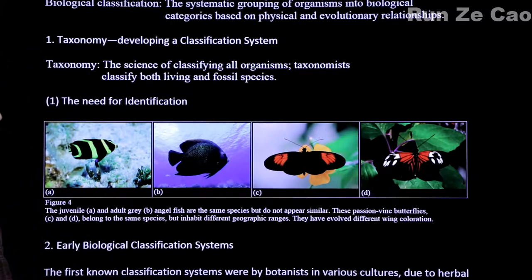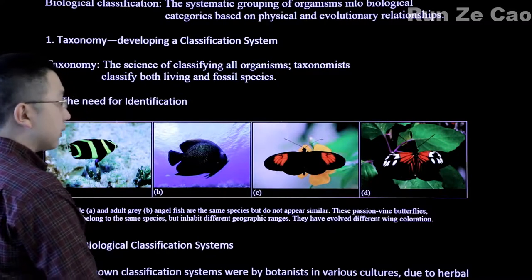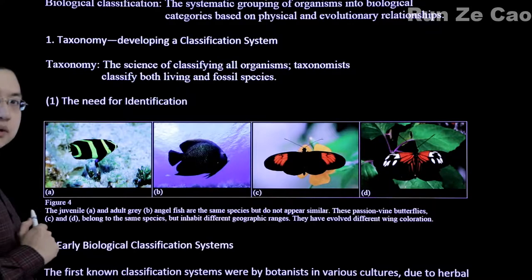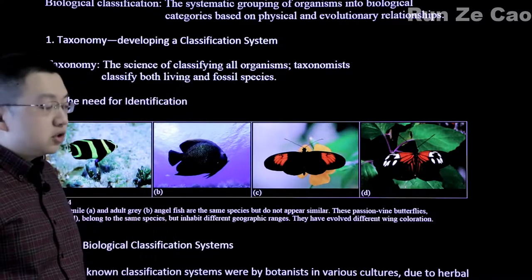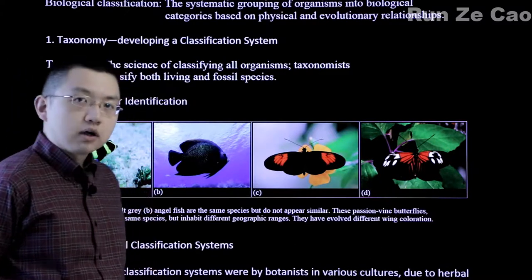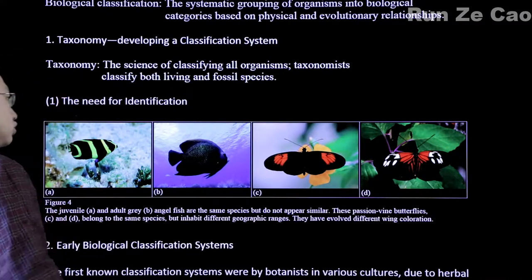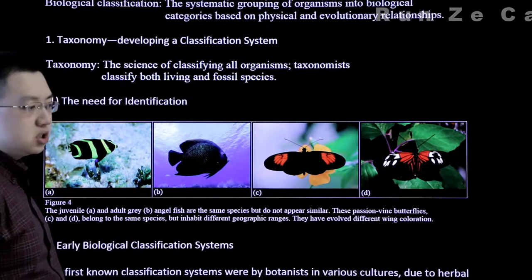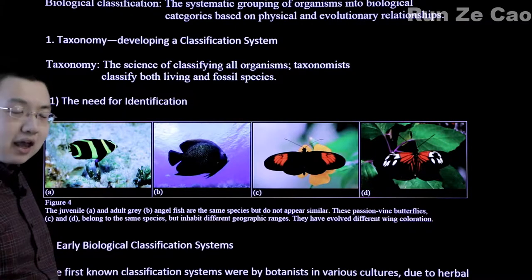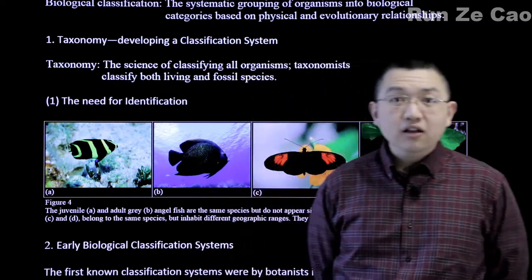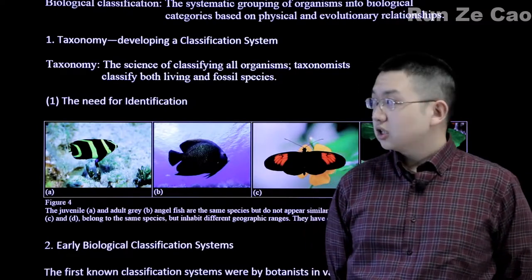Taxonomists work with both living and fossilized species. Living species tend to be easier to work with since morphology is more obvious, especially for soft tissues. However, morphology can be misleading — for example, two butterflies of the same species can differ in wing coloration. They've diverged somewhat genetically since wing coloration is heritable, but they're still reproductively compatible. Juveniles and adults, or even males and females, have sometimes been misidentified as different species based solely on morphology or phenotype.